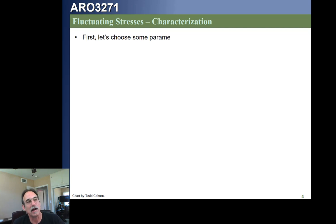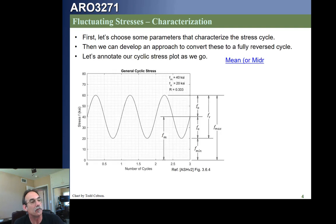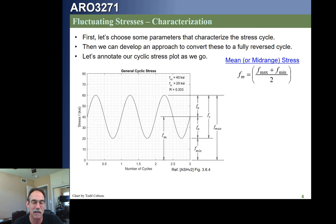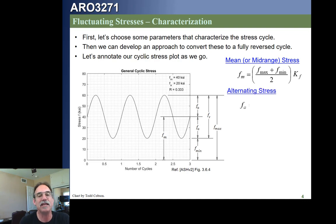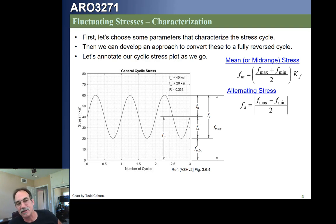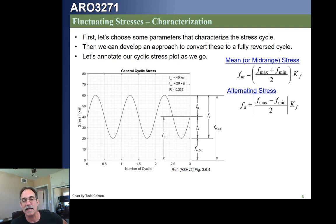We're going to start characterizing our stresses by looking at that stress curve — going from some stress level to another, a max to a min. We need to identify what is the maximum stress and what is the minimum stress on the part. Then we turn those into two other values: the mean stress and the alternating stress. The mean stress is just the average of those stresses, and the alternating stress is half the difference.